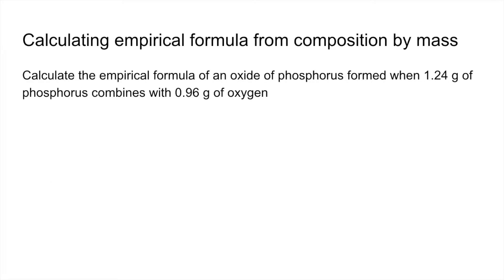So we're going to look at three types of calculations. The first one is calculate an empirical formula from composition by mass. So if you want to have a go, pause the video and then play on when you're ready for the answers.